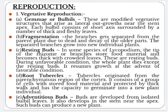Now, reproduction. The sporophyte of Lycopodium reproduces both by vegetative means and by production of spores. Vegetative reproduction takes place by the following methods: gemmae or bulbils, fragmentation, resting buds, root tubercles and adventitious buds.